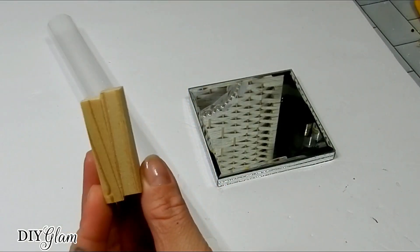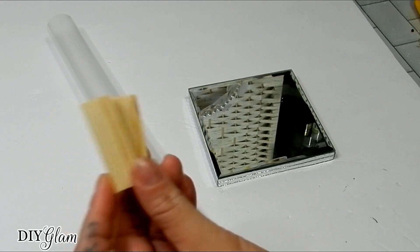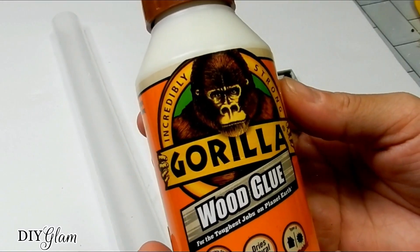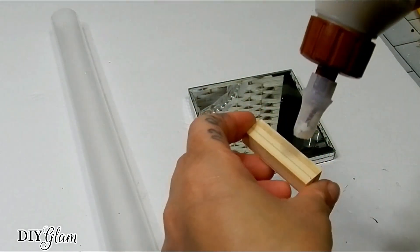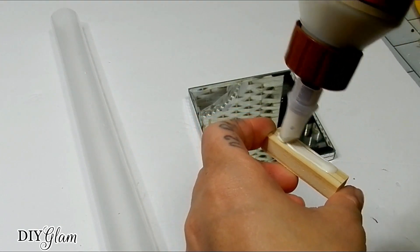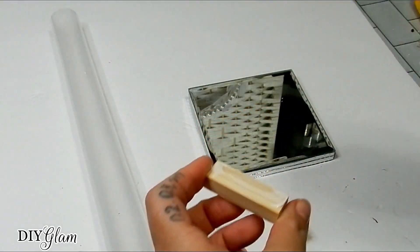Here I have two tumbling tower blocks from Dollar Tree as well as some Gorilla wood glue. I'm going to be gluing both of these blocks together. I'm going to allow these to completely dry.